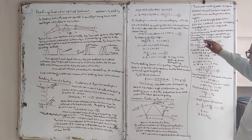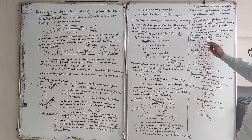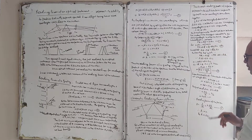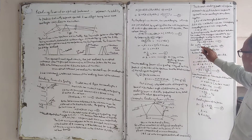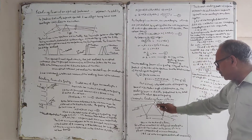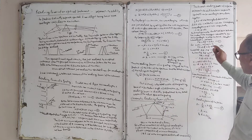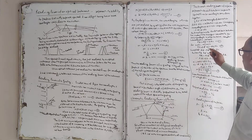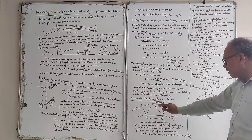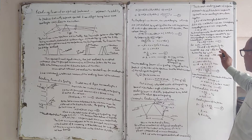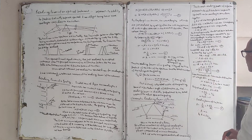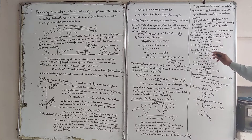By Fermat's principle, the optical path between the incident and the emergent wavefront for any wavelength must be the same. For wavelength lambda, the path PA + AQ = mu times BC. For lambda plus d-lambda, PA + AQ' = (mu - d-mu) times BC. Subtracting these: AQ minus AQ' = d-mu times BC. From the figure, AQ' is approximately AR, so AQ minus AQ' equals RQ. Therefore RQ = d-mu times BC.